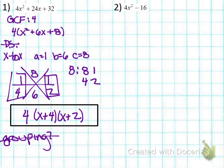Moving on to number 2, I see that I have a common factor of 4, so I'm going to factor that out. I'm left with X squared minus 4. Looking inside the parentheses, I notice that both of those terms are perfect squares and there's subtraction between them, so I'm going to use difference of squares here.